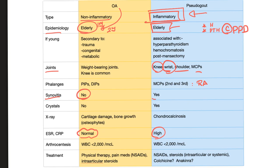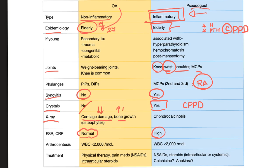Synovitis: not in osteoarthritis, but yes in pseudogout — and it can also happen in rheumatoid. Crystals: none in osteoarthritis, but in pseudogout there are crystals — CPPD, calcium pyrophosphate dihydrate crystals. X-ray: osteoarthritis shows cartilage damage and bone growth — loss of cartilage and gain of abnormal bone called osteophytes. Pseudogout shows chondrocalcinosis — calcium in the cartilage. ESR and CRP are normal in osteoarthritis but high in pseudogout.